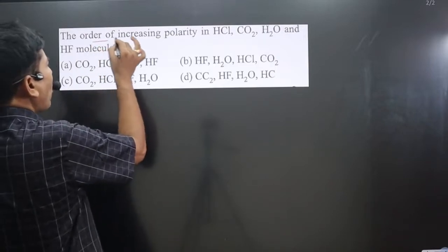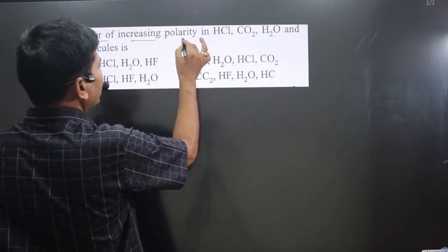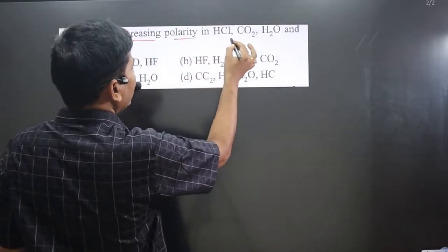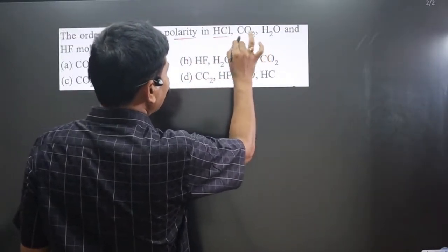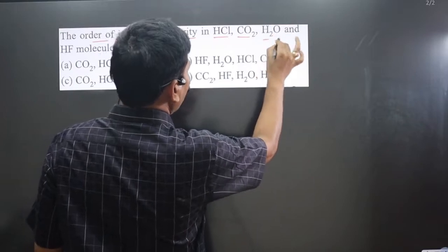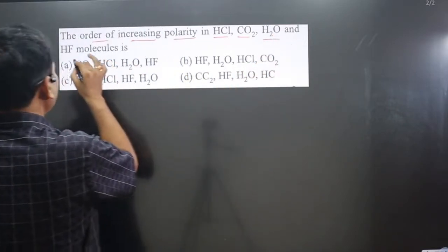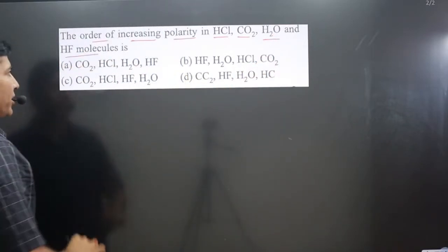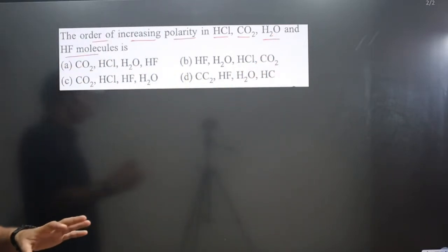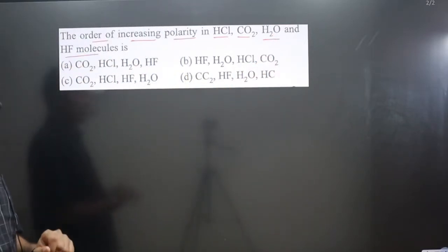The question asks for the order of increasing polarity in HCl, CO2, H2O, and HF molecules. How can we determine the polarity order?